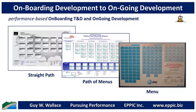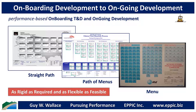Whether the training and development path is a straight path, a path of menus, or just one open menu, it needs to be as rigorous as required by the job itself and the consequences for performance competence, but also as flexible as feasible.